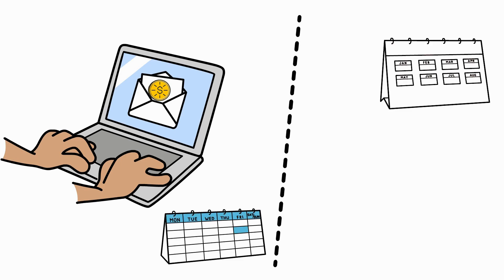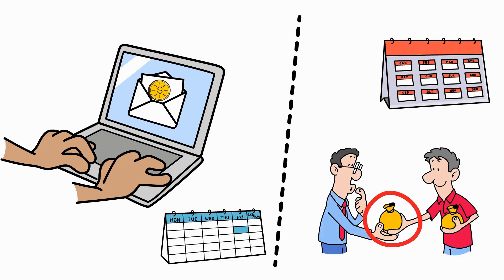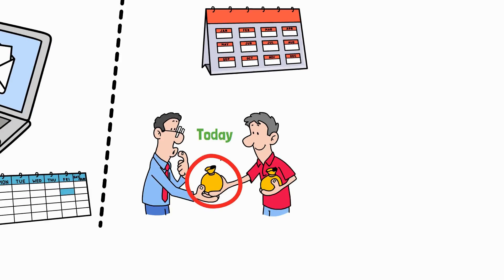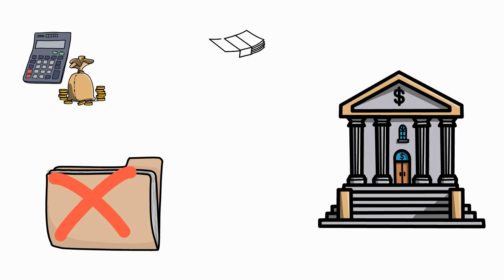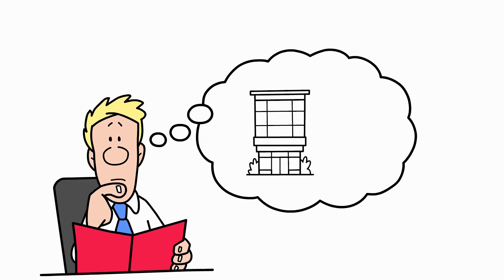So if you send an invoice today for work you did, even if your client pays you next month, you still record that income today. It's the opposite of cash accounting, where nothing is recorded until money actually moves in or out of your bank account. So why do companies use this method?